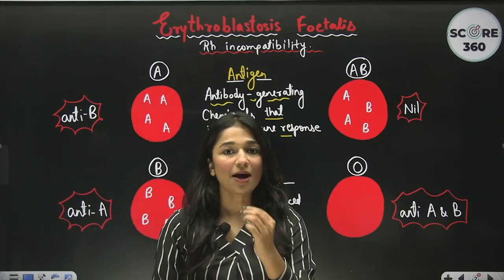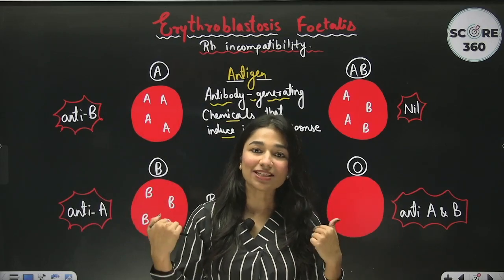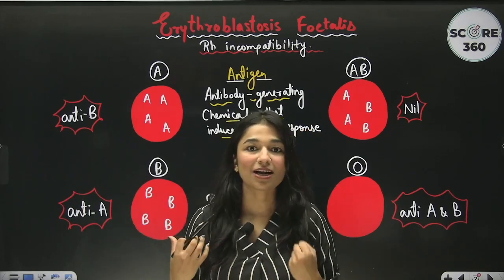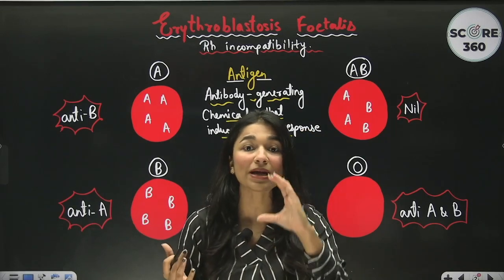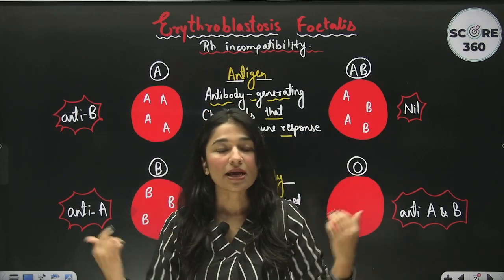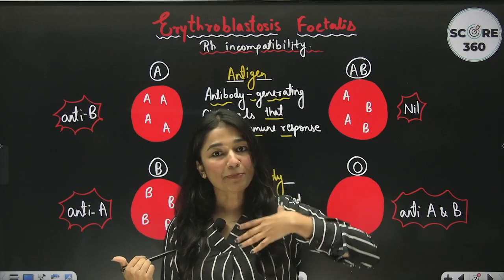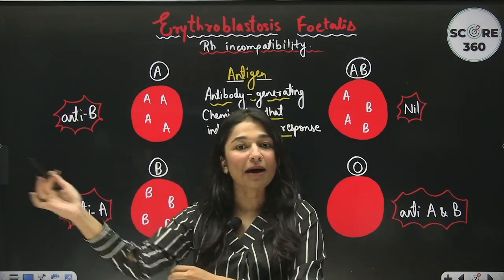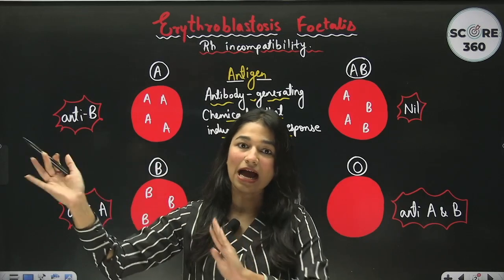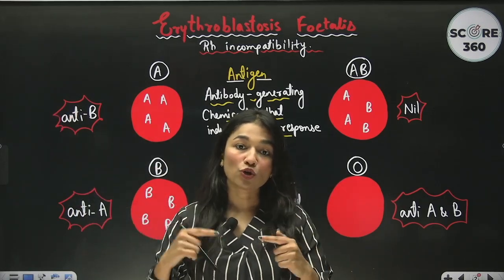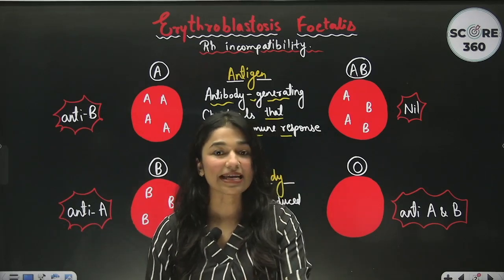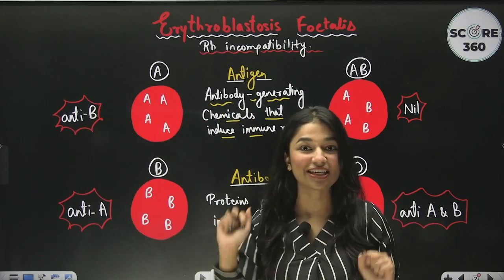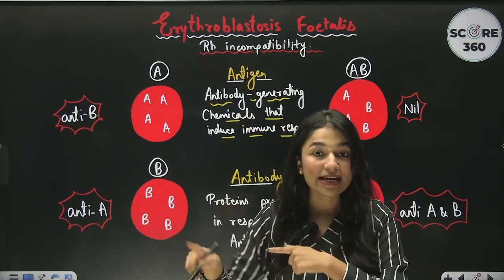Antigens are like ID cards — like the ID card you carry when you go to school or coaching. Our body knows its own antigens and does not generate an immune response against them. It is similar to how if you are in the 11th class, the teacher recognizes you. But if someone from the 12th class sits there, they will be removed. Similarly, if a foreign antigen enters our body, our body recognizes it and generates an immune response against it.